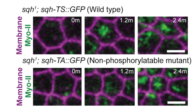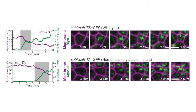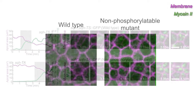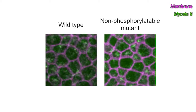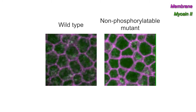Other mutants that decrease myosin phosphorylation — where you would expect not to be able to fully activate the myosin motor — still show a polarized accumulation of myosin, but these mutants also do not pulse. This suggests that a transition between low to high and then back to low activity of the myosin motor is required to get these cycles of assembly and disassembly, which are important for the ratchet-like constriction of the cell.